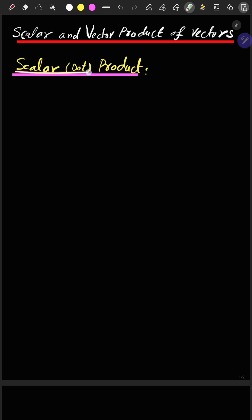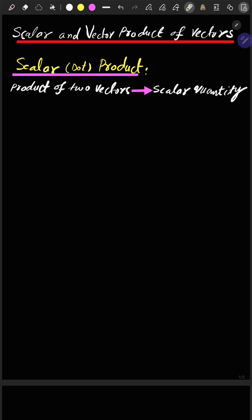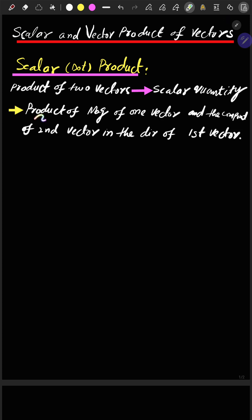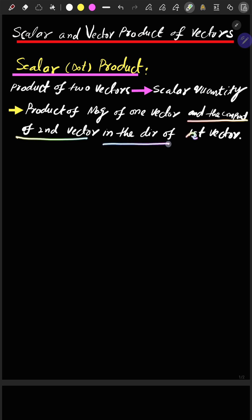Scalar and vector product of vectors. Scalar product: if the product of two vectors gives a scalar quantity, it is called a scalar product. Its physical interpretation can be understood as the product of the magnitude of one vector and the component of the second vector in the direction of the first vector.